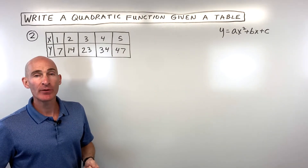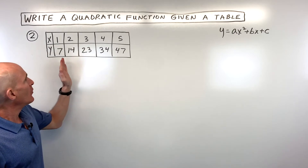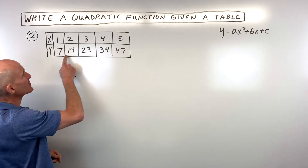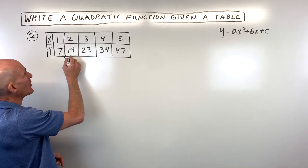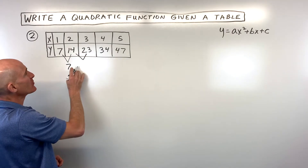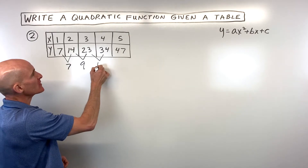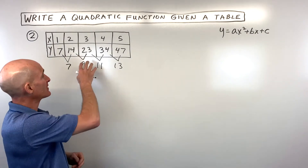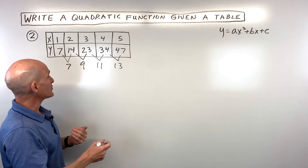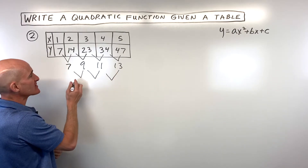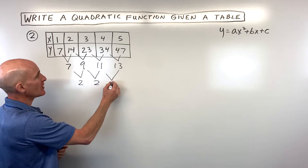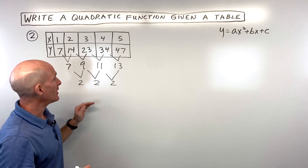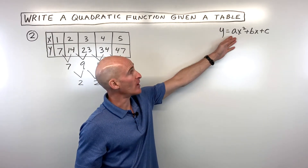Let's look at example 2 — pause the video and try it on your own. We have this table where x values go up by 1 each time. Looking at the first differences: 7, then 23 minus 14 is 9, 34 minus 23 is 11, and 47 minus 34 is 13. Those aren't the same, so it's not first degree. Subtracting again: 9 minus 7 is 2, 11 minus 9 is 2, 13 minus 11 is 2. We get the same number the second time, so it's a second-degree equation — a quadratic.